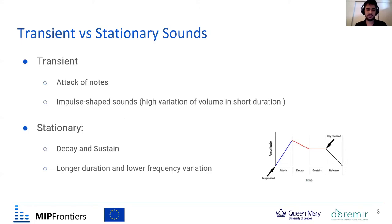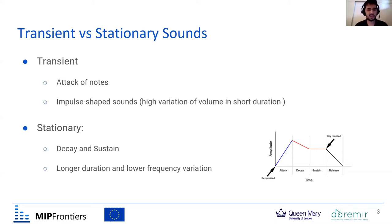Before showing the model itself, it's important to say a little bit about transients and stationary. This is the ADSR model for sound. The transients are basically the attack part of the note, as you can see here in blue — it has high volume variation in a short duration. The stationary part is the decay and sustain usually; sometimes the release can be stationary for some sounds and transient for others. It has a longer duration and lower frequency variation.